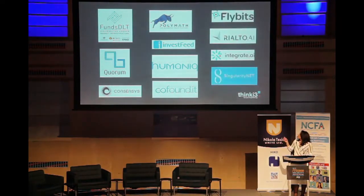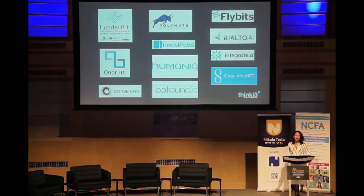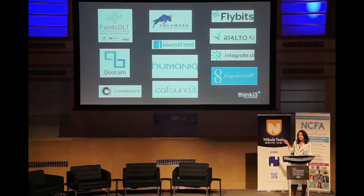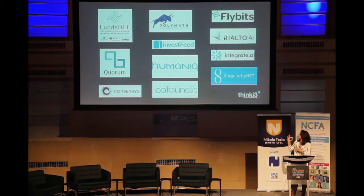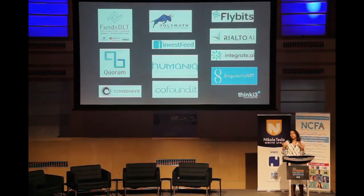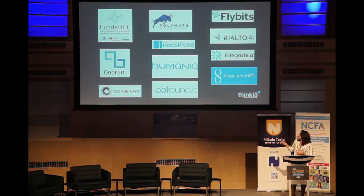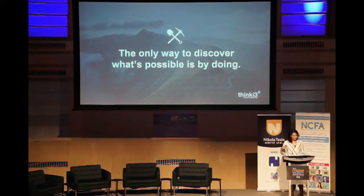In the AI space, shout out to Flybits, Integrate.ai, Realtor.ai, and Singularity.net — all companies making great progress in AI and doing some pretty brilliant things that are going to provide much more context-specific services applicable to the financial services industry. When I think about the model of a robo-advisor and getting that context-specific advice, those are the companies I think are going to get us there. Singularity.net is unique because they're using the blockchain to create a marketplace for the exchange of AI technology. I think you'll see a number of really interesting things coming out of them.